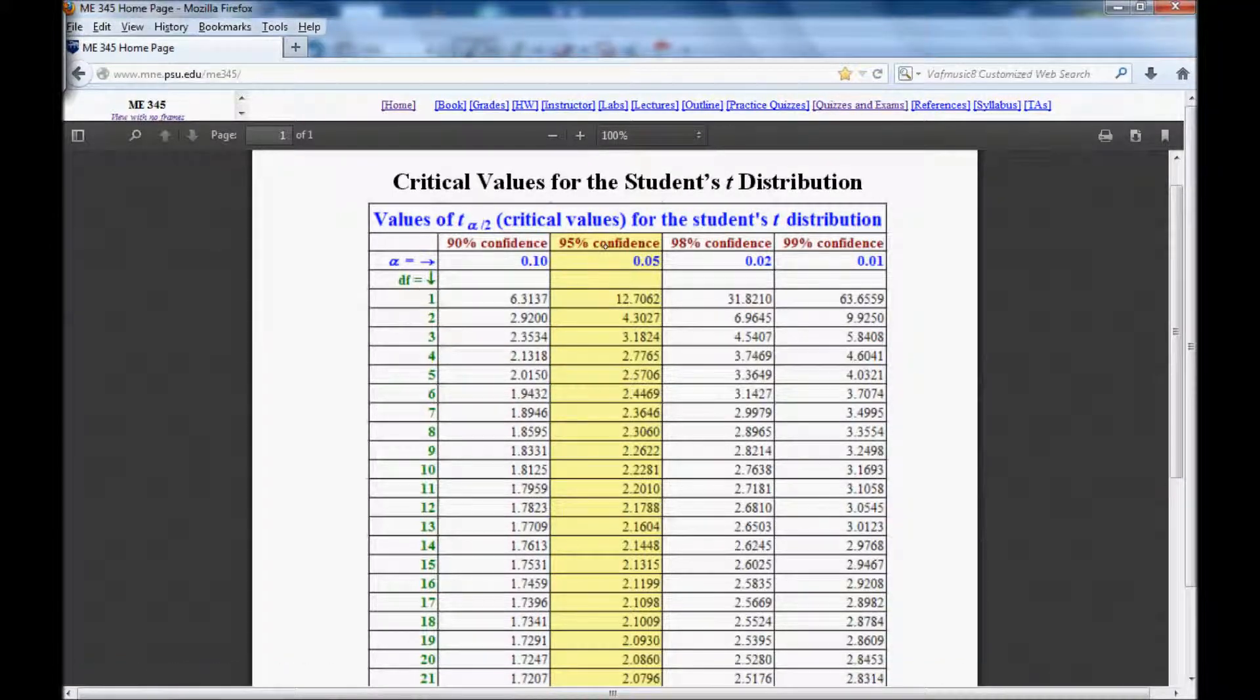And that table is up here. So 95% is the highlighted row. DF of 19, I get 2.0930.